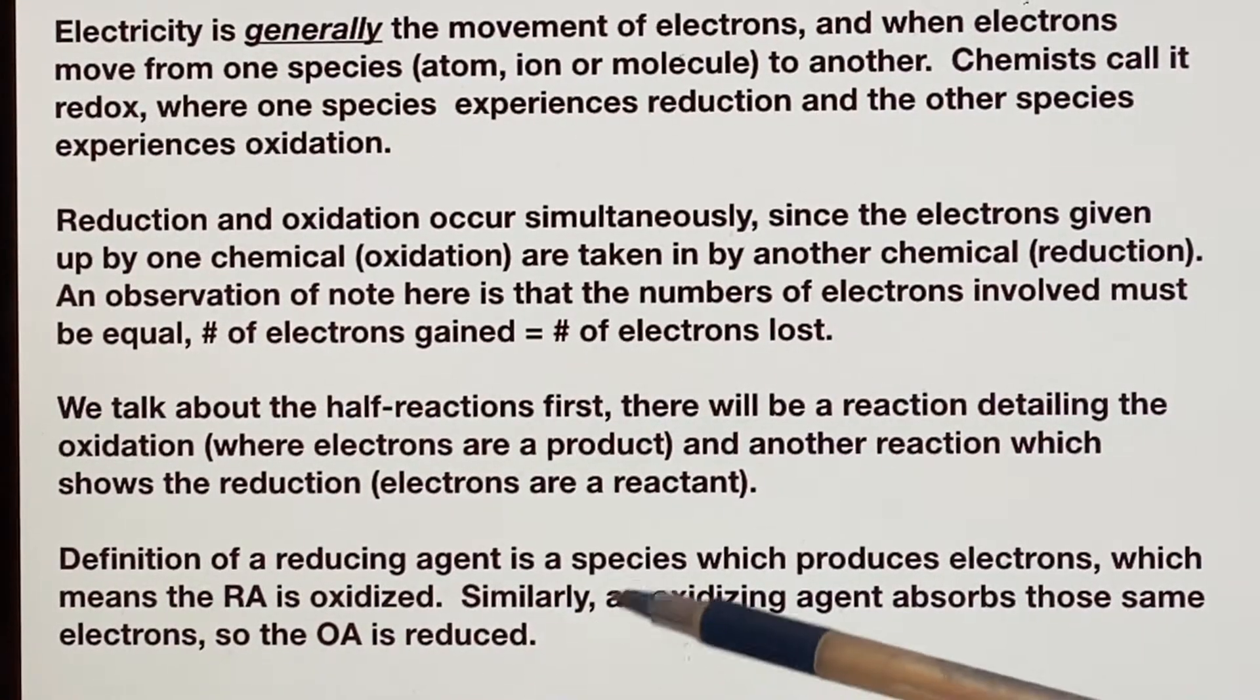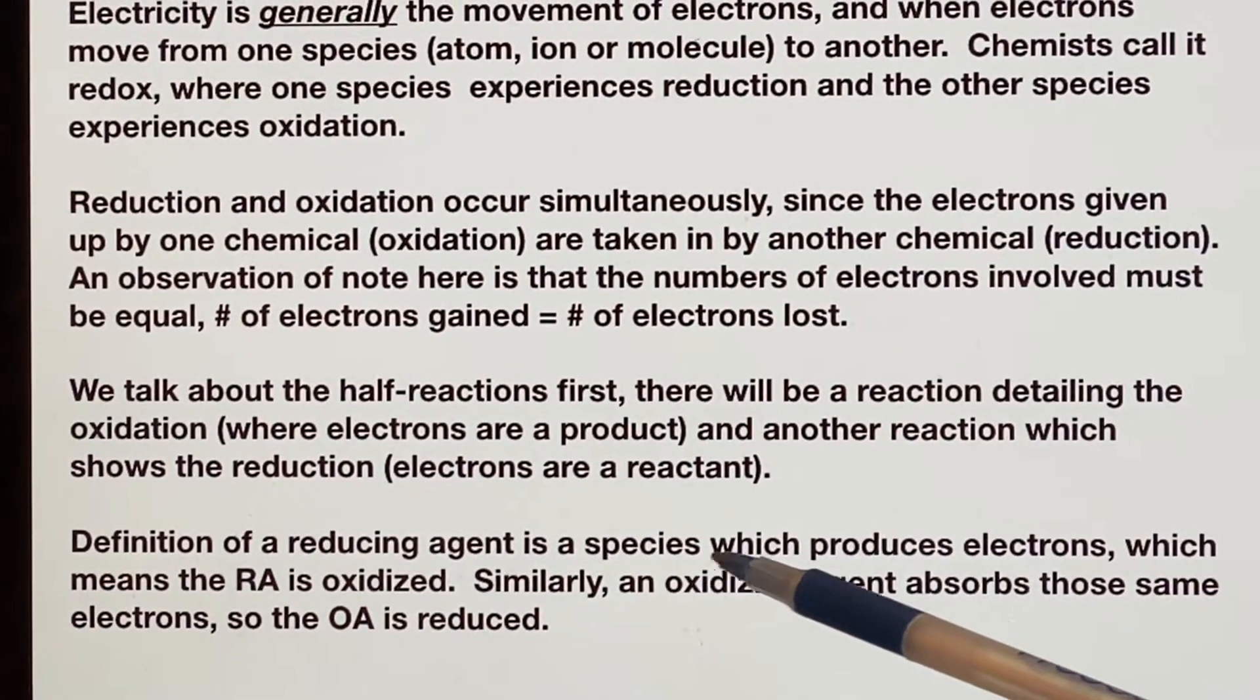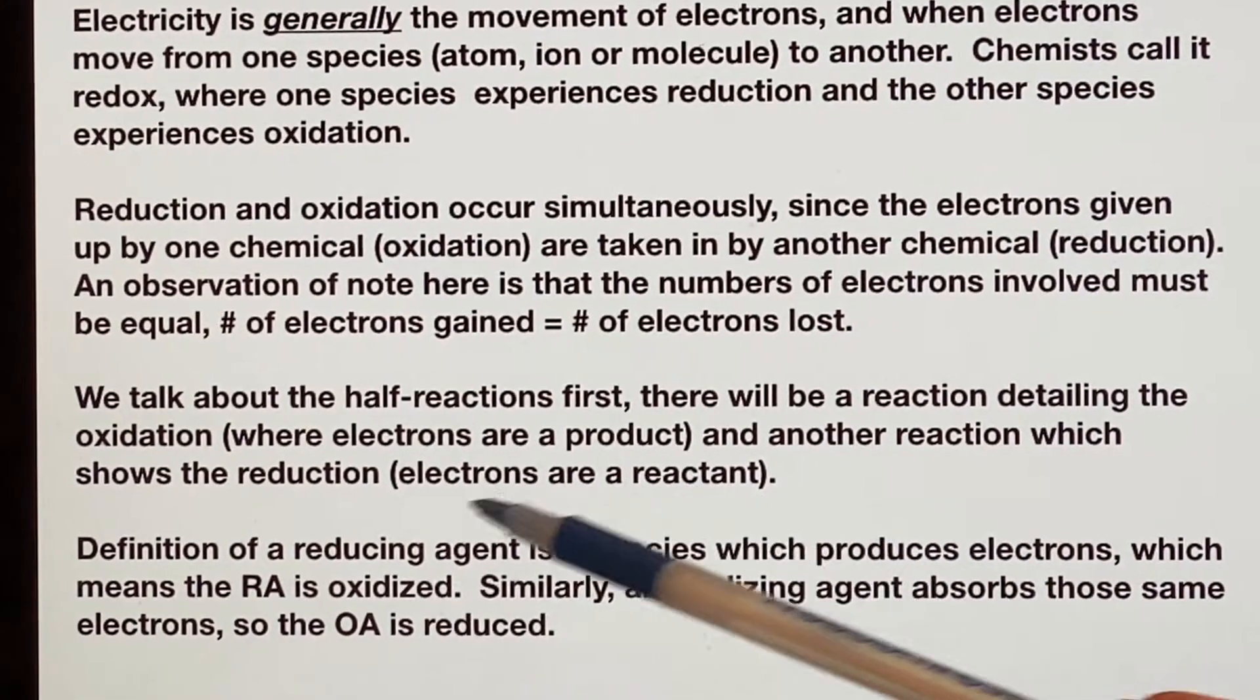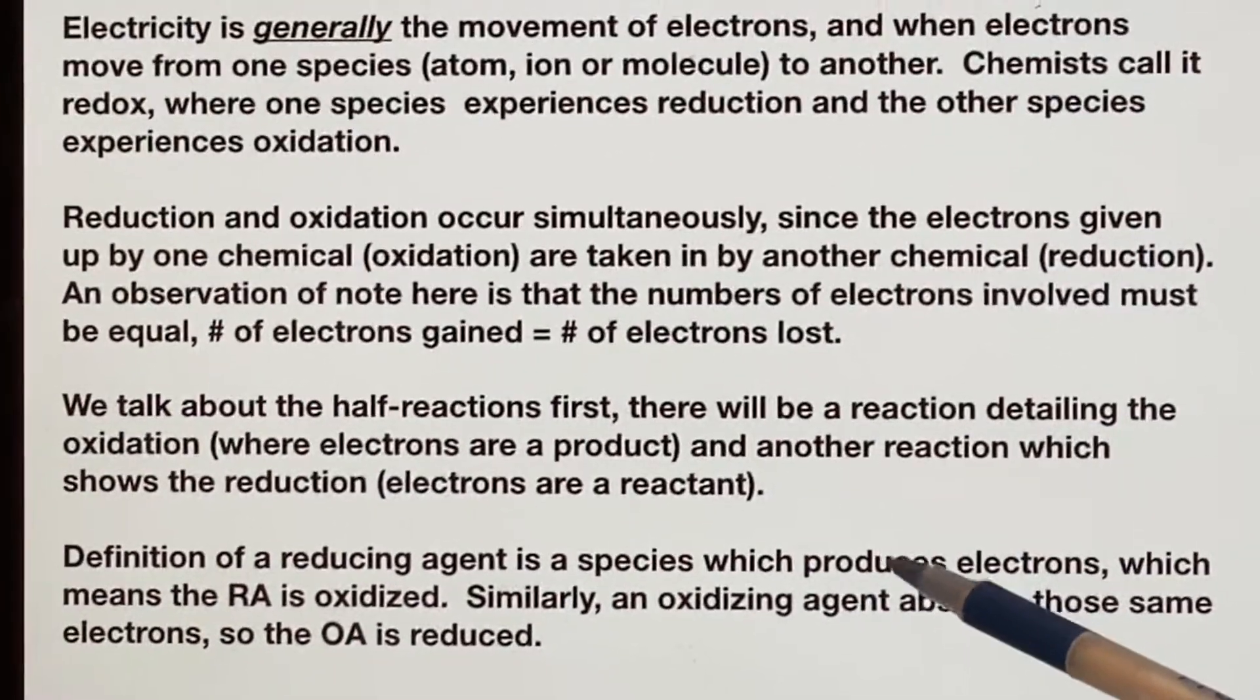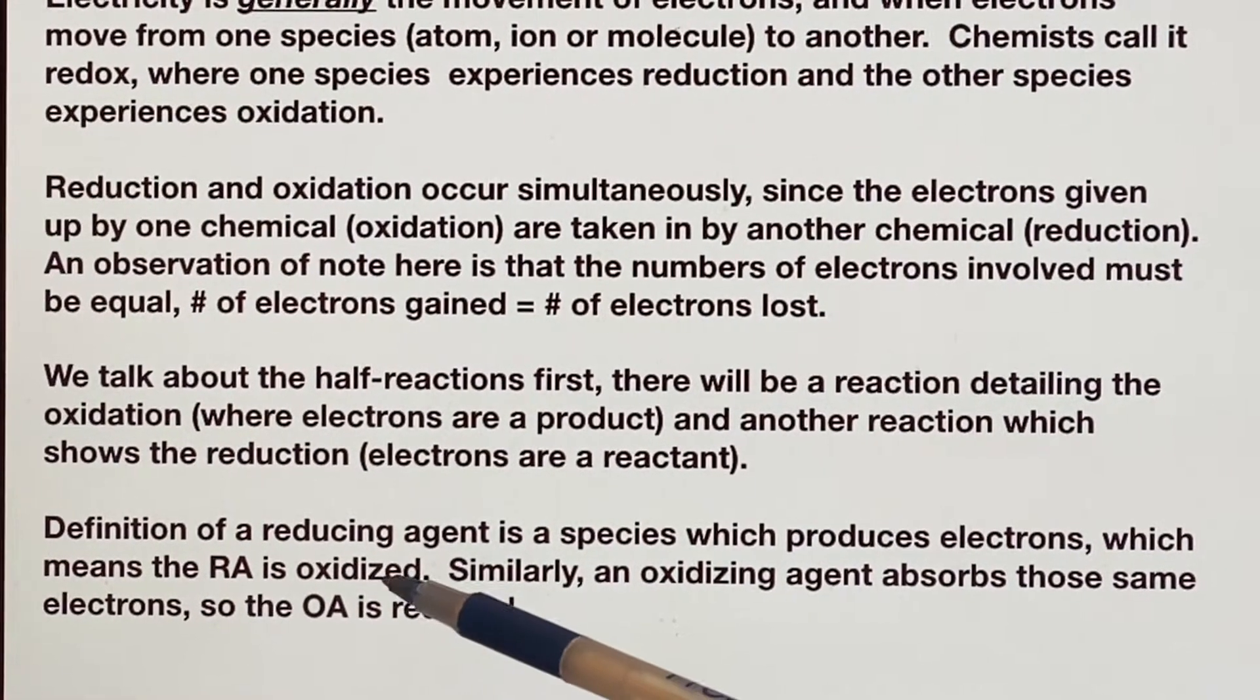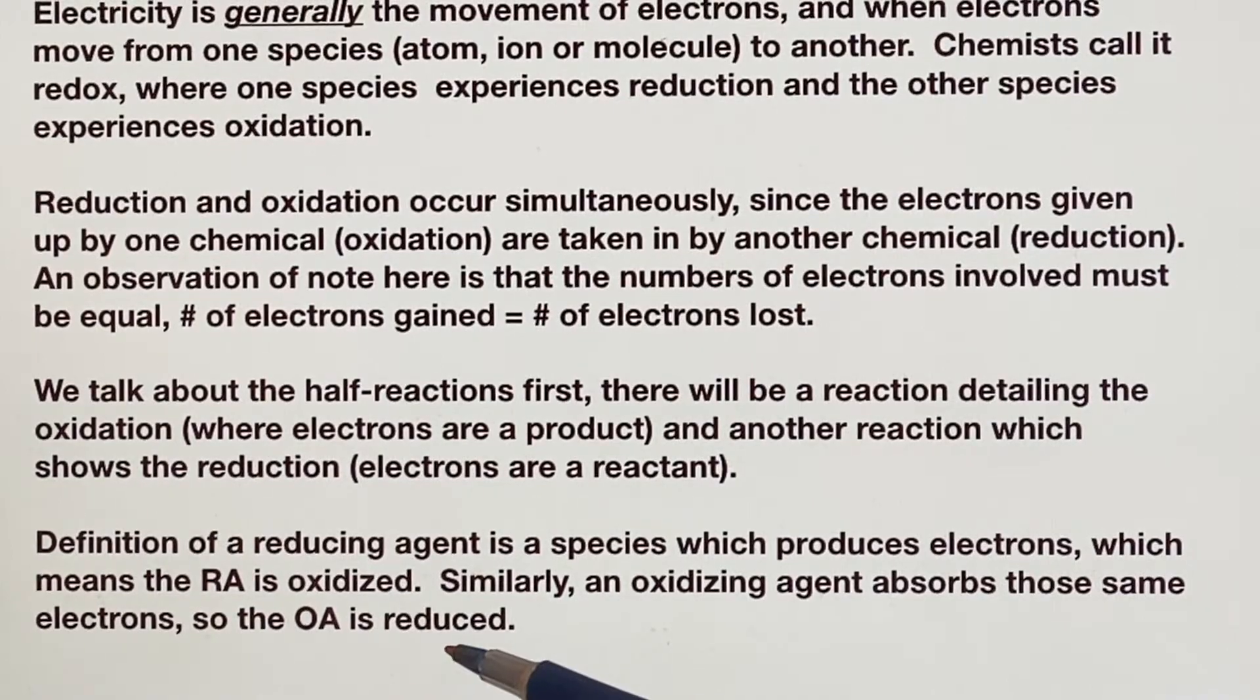The definition of a reducing agent is a species that will produce the electrons. The electrons have that negative charge, so they're going to furnish electrons that can reduce something else. I'm a reducing agent—here's my electrons, you can now be reduced. I'm reducing you. But since I'm producing electrons, that means automatically that I am oxidized. And an oxidizing agent will absorb the same electrons, so the oxidizing agent is the one that is reduced.